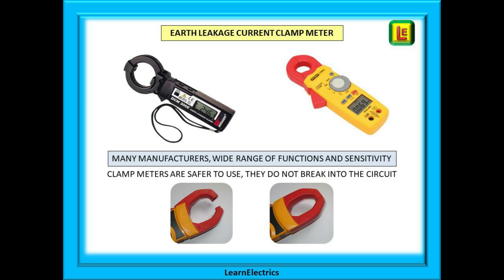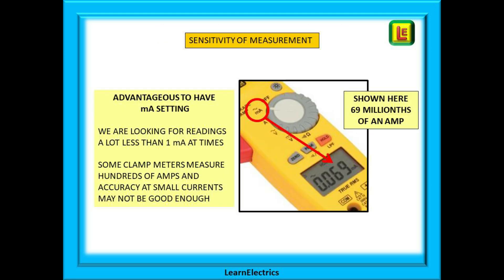The preferred method for measuring earth leakage currents is with an earth leakage current clamp meter. There are many manufacturers and many of these meters have additional functions and varying ranges of sensitivity. A clamp meter is considered a safe method as it literally just clamps around the cables without the need to break into the circuit. When choosing a clamp meter it is a great advantage to have one with a milliamp range, as we are looking at readings that may be well below 1 milliamp, which may not show accurately on 100-amp or greater ranges.